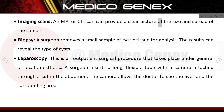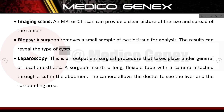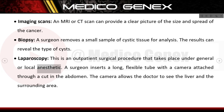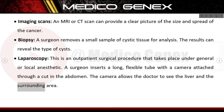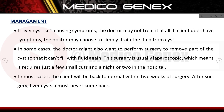Further diagnostic workup: ultrasound (USG) is used to find out the nature, number, and characteristics of the liver cyst. An MRI or CT scan can provide a clear picture of the size and spread of any abnormality. A biopsy involves a surgeon removing a small sample of cystic tissue for analysis; results can reveal the type of cyst. Laparoscopy is an outpatient surgical procedure performed under general or local anesthetic, where a surgeon inserts a long flexible tube with a camera through a cut in the abdomen to visualize the liver and surrounding area.